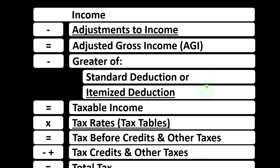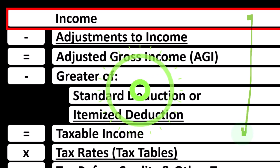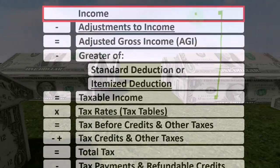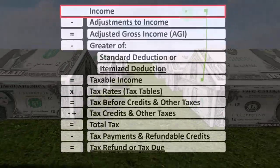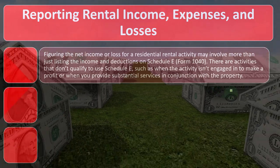Looking at the Income Tax Formula, we're focused on Line 1 Income. The first half of the Income Tax Formula is, in essence, an Income Statement — although just an outline, with other forms and schedules flowing into these line items. One of those is the Schedule E, which is itself an income statement, having rental income minus rental expenses, with the net rental income flowing into Line 1 Income of the Income Tax Formula.